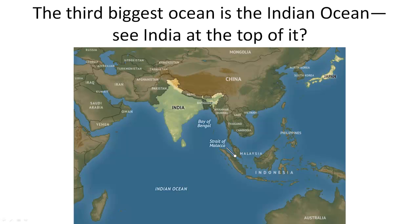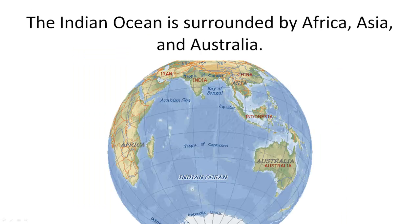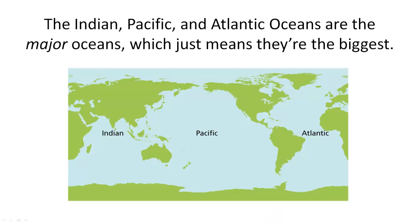The third biggest ocean is the Indian Ocean. See India at the top of it? The Indian Ocean is surrounded by Africa, Asia, and Australia. The Indian, Pacific, and Atlantic Oceans are the major oceans, which just means they're the biggest.